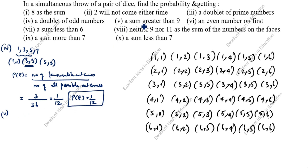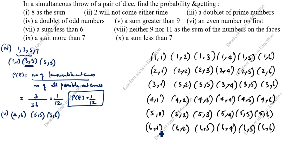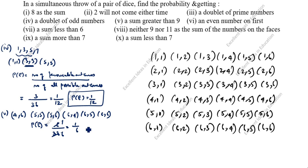Fifth question: sum greater than 9. We need sums of 10, 11, or 12. Favorable pairs: (4,6) = 10, (5,5) = 10, (5,6) = 11, (6,4) = 10, (6,5) = 11, (6,6) = 12. Number of favorable outcomes = 6. P(E) = 6/36 = 1/6.